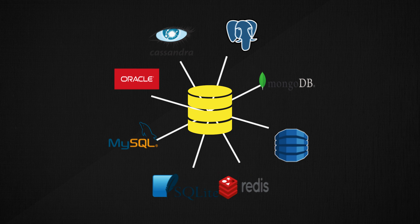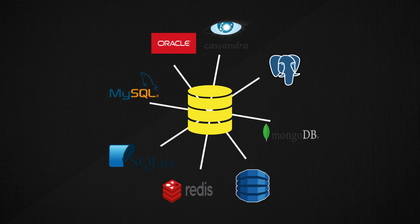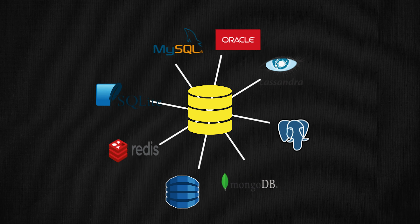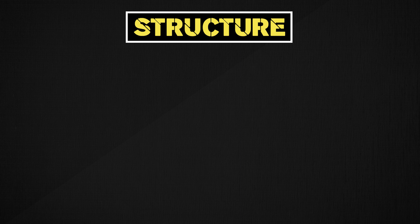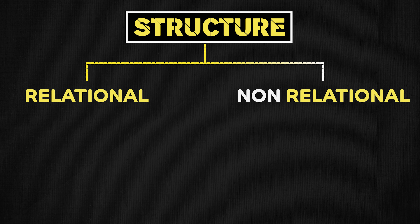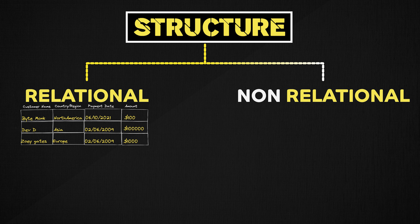In my storage video earlier, I briefly mentioned there are hundreds of database options out there. Each of them have their own characteristics and support certain functionalities. But there is one characteristic that we can use to categorize the databases into two major categories, and that characteristic is mainly based on the structure of data stored in the database. The two categories are relational and non-relational databases.